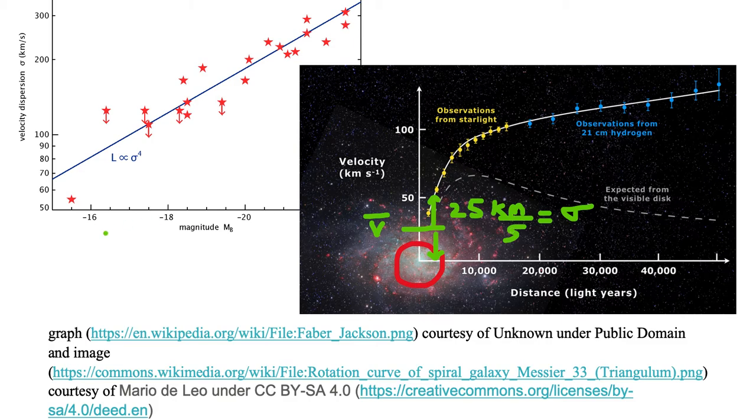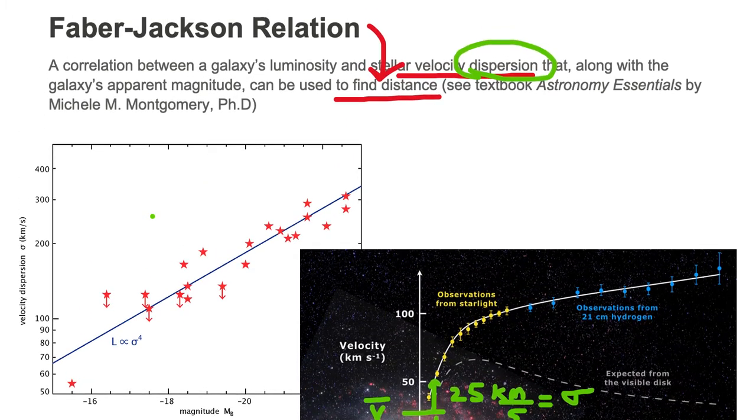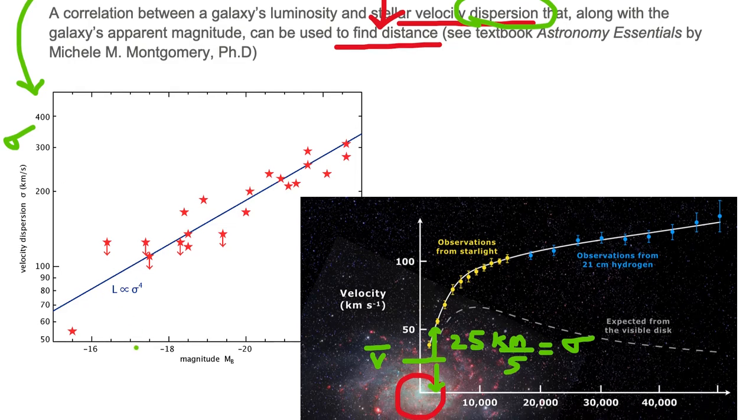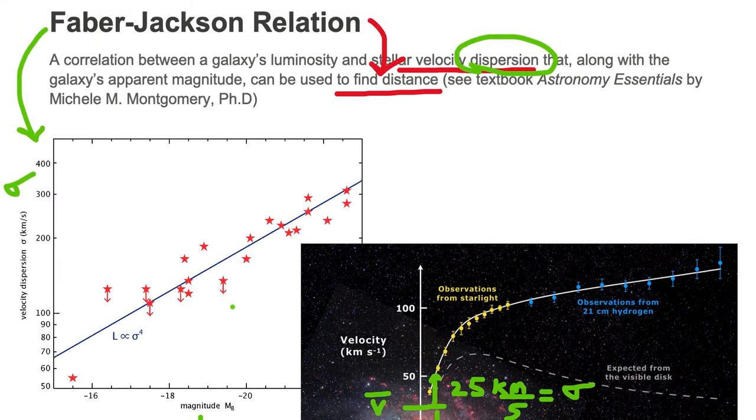Now, once you know the dispersion, you will take a look at a Faber-Jackson relation, where we have dispersion plotted on the vertical axis, and on the horizontal axis, you have absolute magnitude or luminosity. The second piece that we need in this relation is luminosity.